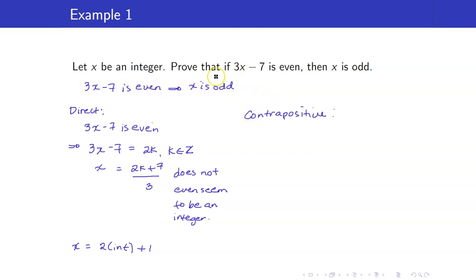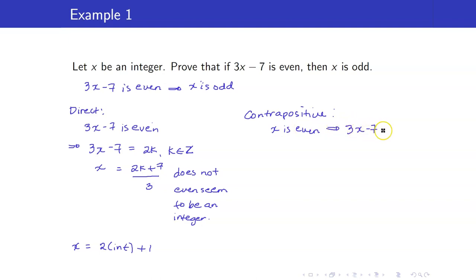The contrapositive negates the conclusion: we want to show that if X is even, then 3X minus 7 is odd.